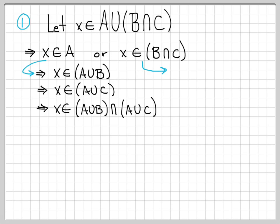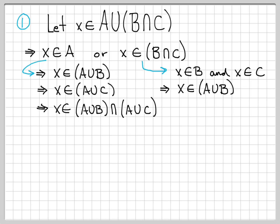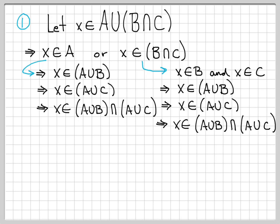What about the other option? It could be that X is in A union B intersect C but not in A — it could be in the second part, B intersect C. This means X is in B and in C, because that's what intersection means. So X has to be in A union B, since X is in B and unioning A keeps it in the set. Similarly, since X is in C, it must also be in A union C. Since it's in both sets, it's also in their intersection. So in either case, X ends up as a member of A union B intersect A union C.